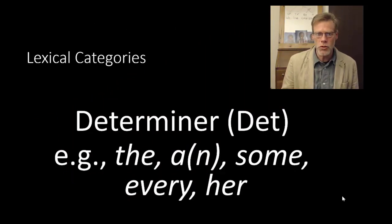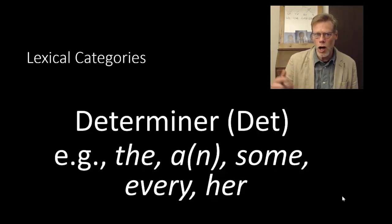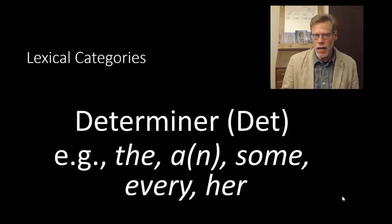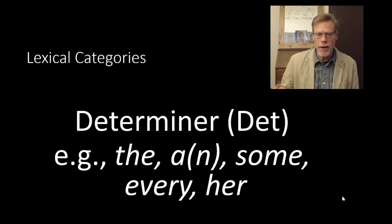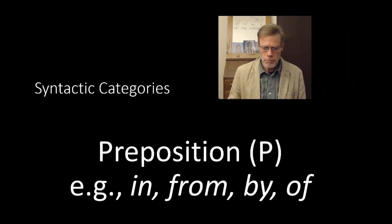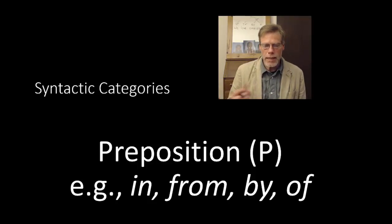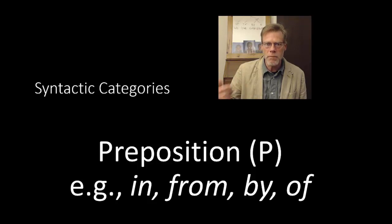Determiner — that's the term linguists use; you might have been taught the term article. This refers to words like the and a/an — I consider that to be one word, it's just a phonological alternation: if it precedes a vowel it's an, if it precedes a consonant it's a. We also have some, every, her. Notice that all of those fit the same frame: the dog, a dog, some dog, every dog, her dog. Preposition — we talked about one test: the rabbit ran blank the fence — in, from, by. Notice that of doesn't fit in that frame, but you can find a frame that demonstrates it behaves similarly to other prepositions.